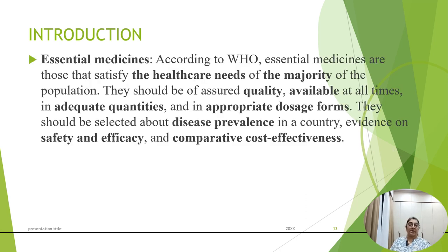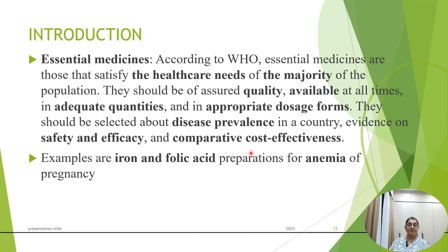According to WHO, essential medicines are those that satisfy the healthcare needs of the majority of the population. They should be available at all times in adequate quantity and in appropriate dosage forms. They are selected based on disease prevalence in the country, evidence on safety and efficacy, and comparative cost-effectiveness. An example is iron and folic acid preparations for anemia in pregnancy, which should always be available in adequate quantity and appropriate dosage form.